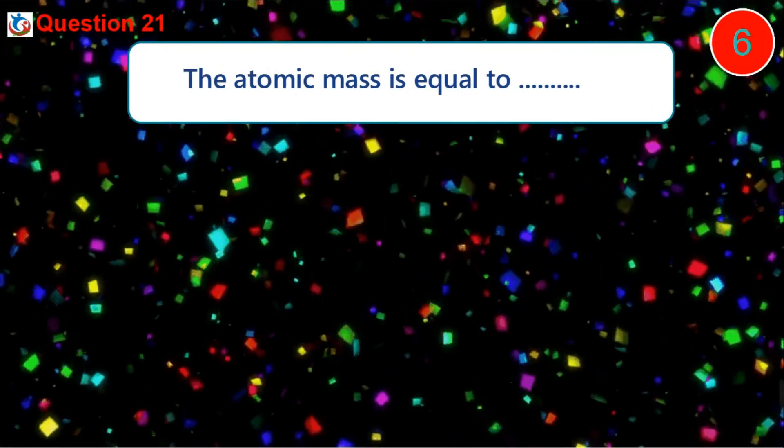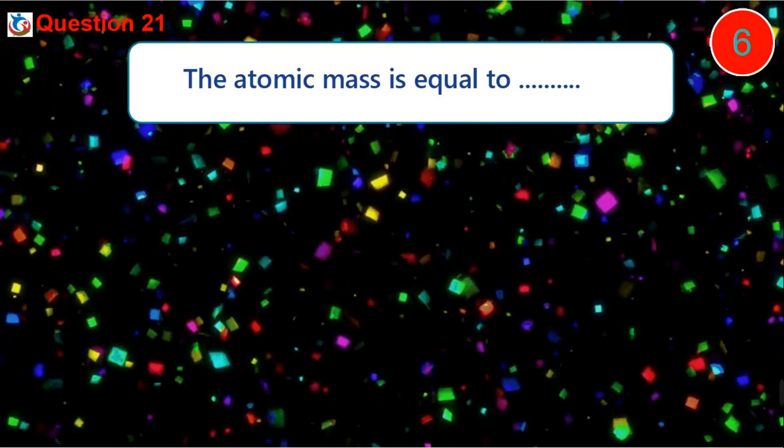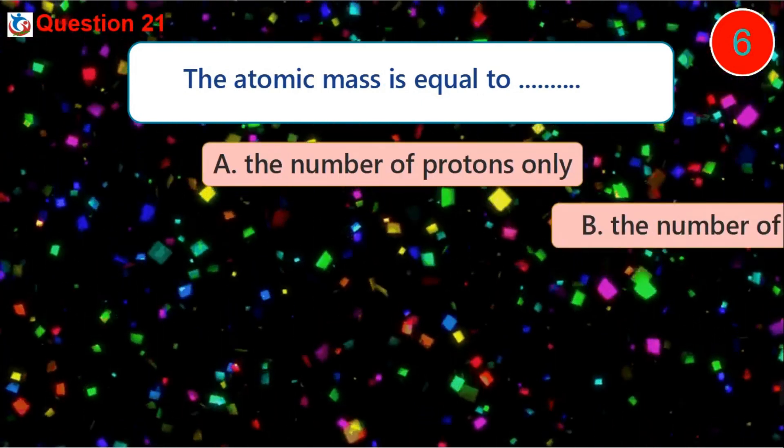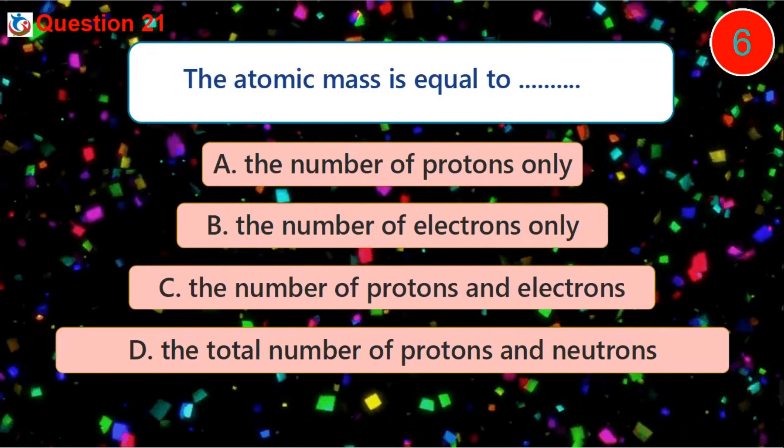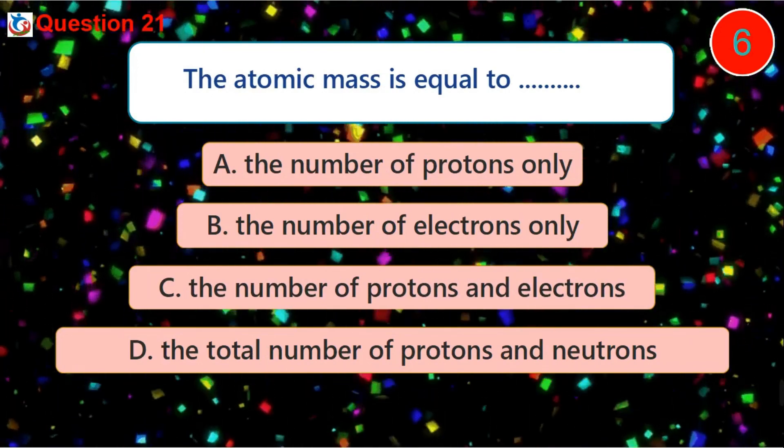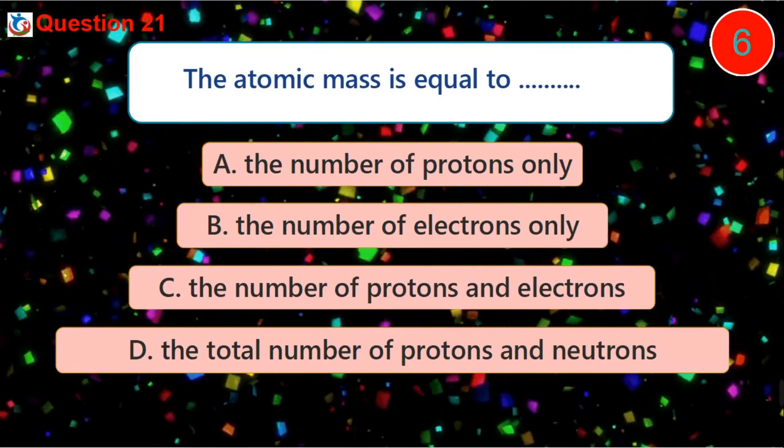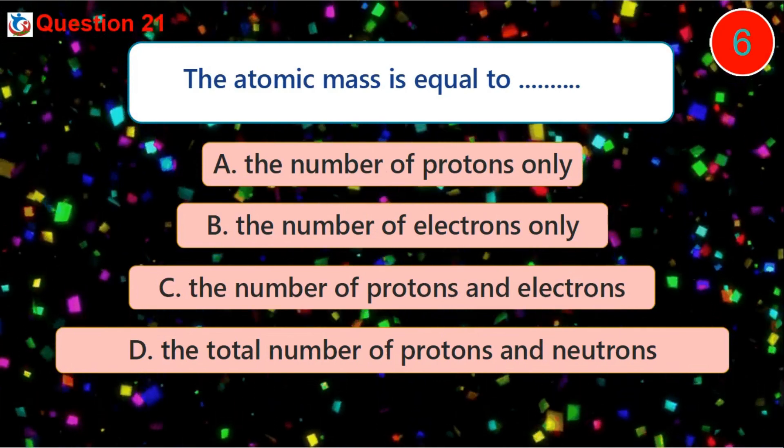Question 21. The atomic mass is equal to dash. A. The number of protons only B. The number of electrons only C. The number of protons and electrons D. The total number of protons and neutrons.